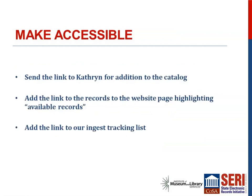After records go onto the website, I send the link to Katherine so she can add it to the catalog. If someone searches SV ArcCat and finds a record, they'll have a link to the electronic records archive. We also have a list of records available in SARA on the homepage, organized by state records, private, and local, so users can browse what's available. We also add it to our ingest tracking list, an Excel spreadsheet that tracks what we have as far as electronic records and legacy media in the stacks, what has gone into Preservica, and what still needs to be preserved long term.